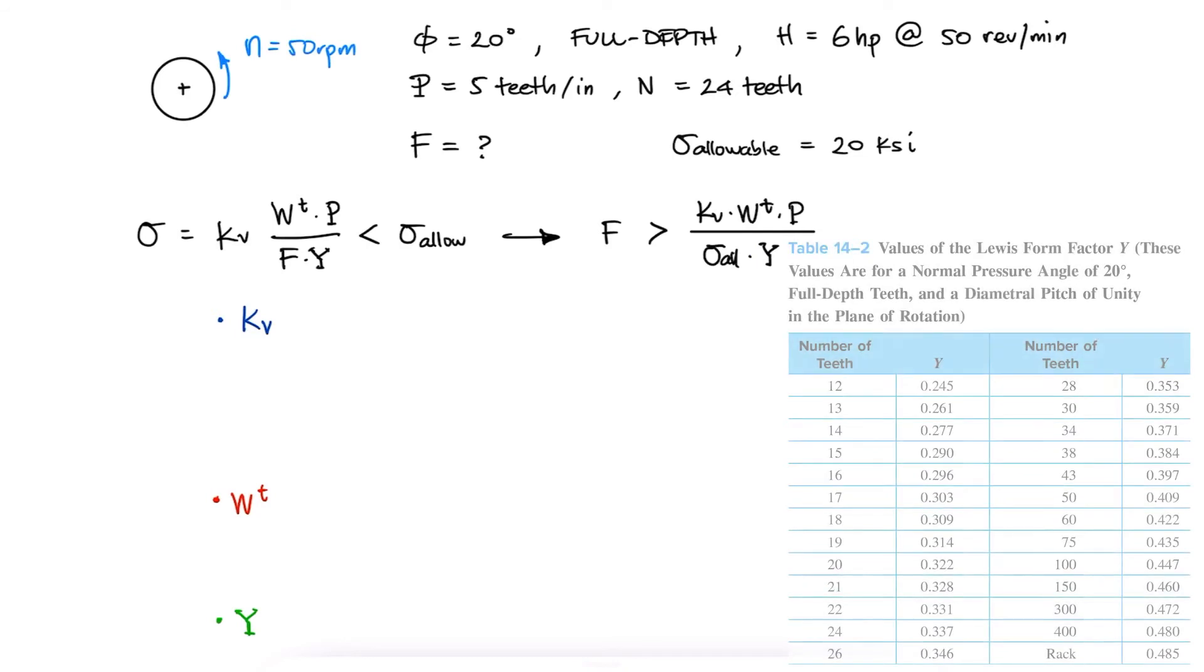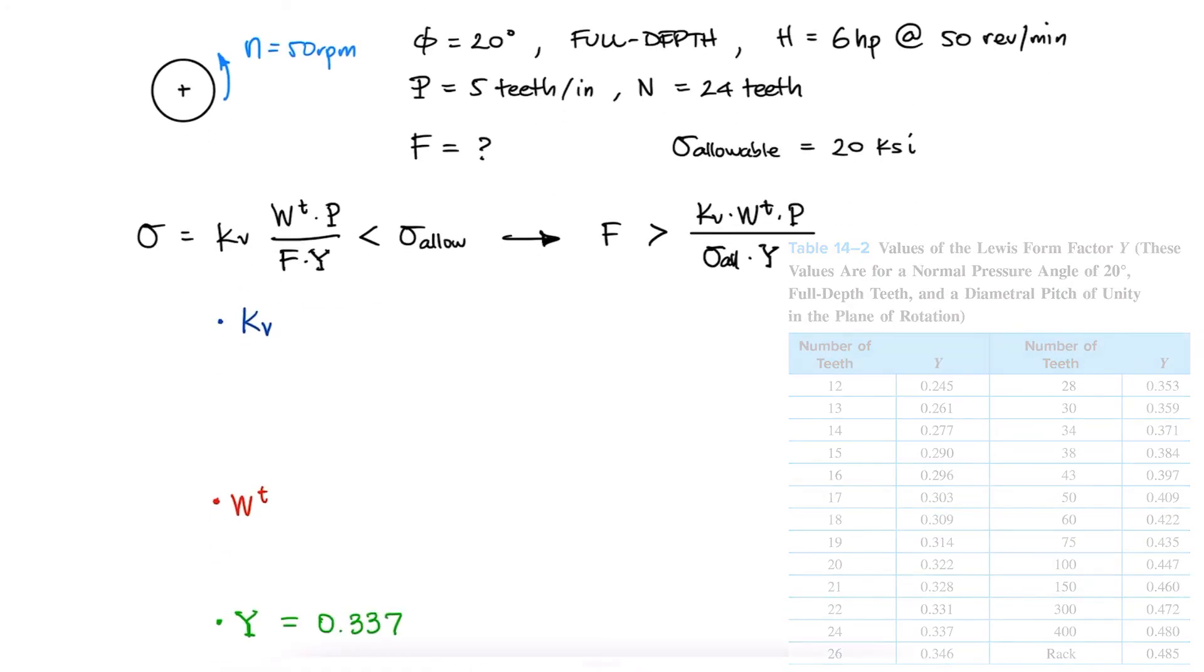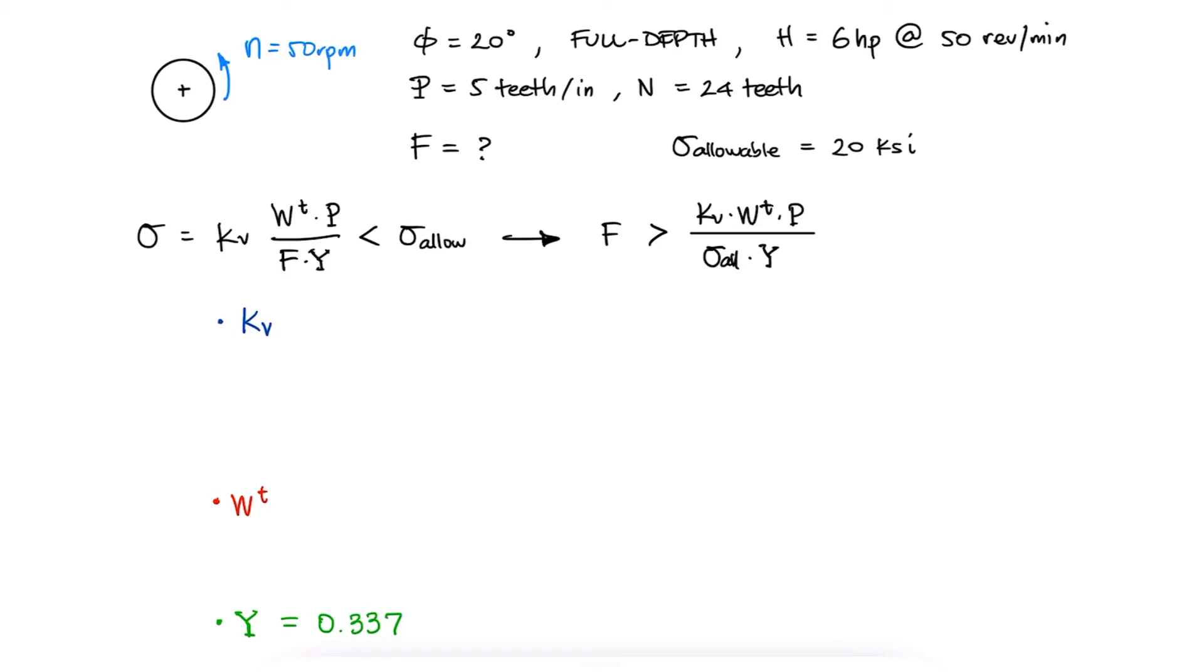The Lewis form factor for full depth teeth with a normal pressure angle of 20 degrees in a gear that has 24 teeth is 0.337. From the power equation equal to torque times the angular velocity, we can solve for the tangential component of the interaction force W, and realize that we need the radius of the gear.